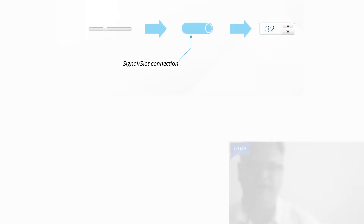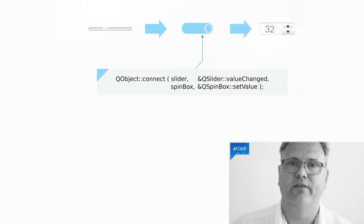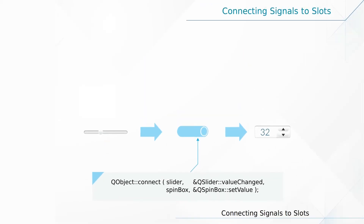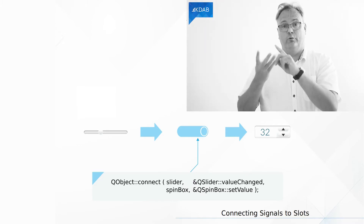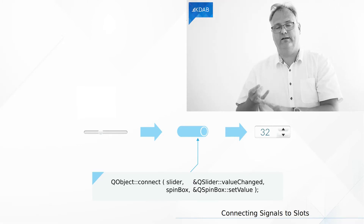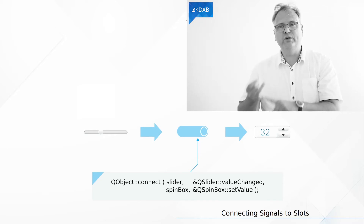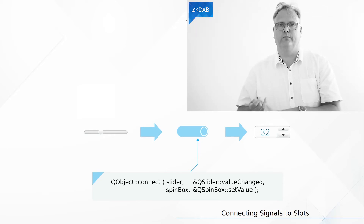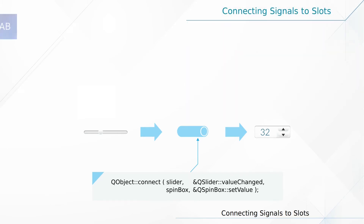The signal-slot connection in code looks like this. It's a static method on QObject. The static method takes four parameters: who is emitting the signal, which signal is being emitted, who is implementing the slot or the method that we connect to, and which method are we connecting to. There are a few different variants for how you do your signal-slot connection.